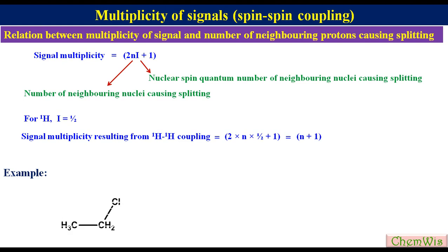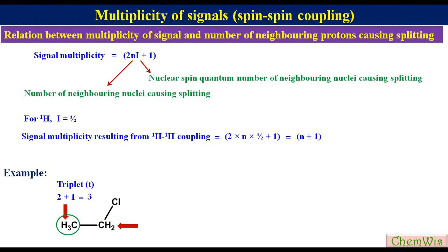For example, ethyl chloride. If we have to find the multiplicity of the signal arising from the methyl group, we will first look at the number of protons on the neighboring carbon. There are two protons on the neighboring carbon, so the multiplicity of the methyl signal will be 2 + 1 = 3, meaning it will appear as a triplet. Similarly, for the CH₂ signal, there are three protons on the neighboring carbon, so the multiplicity will be 3 + 1 = 4, meaning it will appear as a quartet.